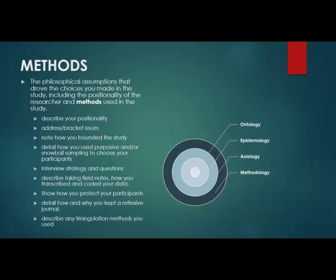This is in no certain order, but you're going to look at your positionality — where are you situated in this organization or phenomenon? You're going to address or bracket any biases. You need to note how and why you bounded the study the way you did. How did you choose participants? How did you decide how many? How did you decide who to interview and who not to interview? If you used snowball sampling, describe how that happened — it's a really great technique. Some of your best interviews will come from the snowball, even over the original list.